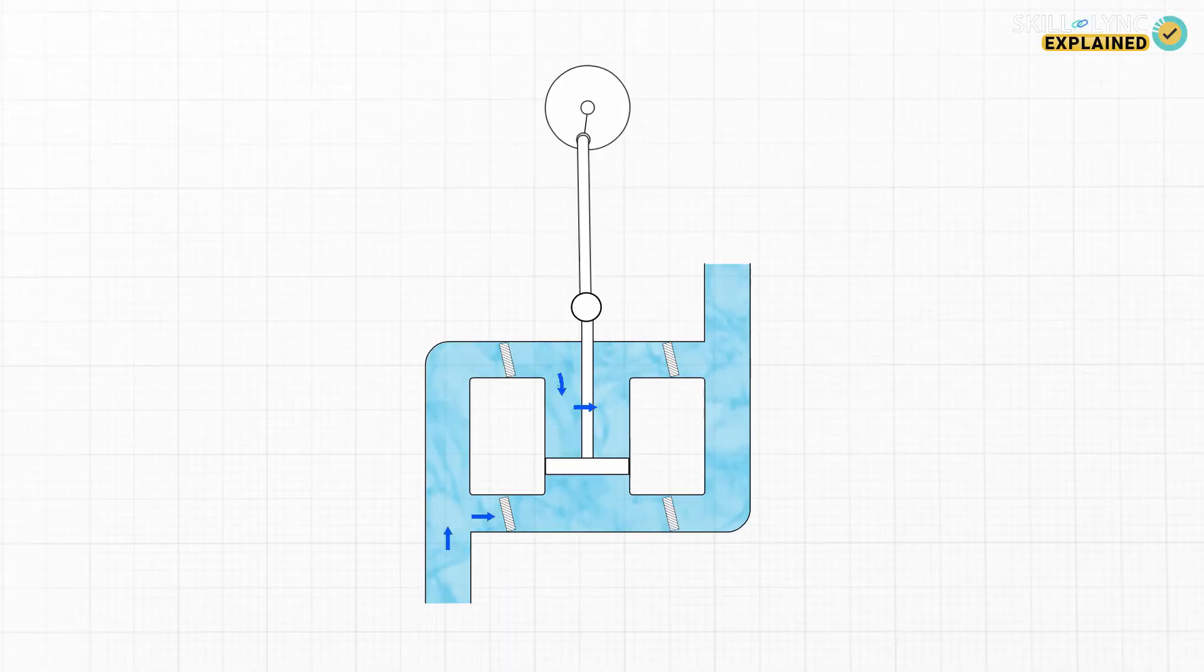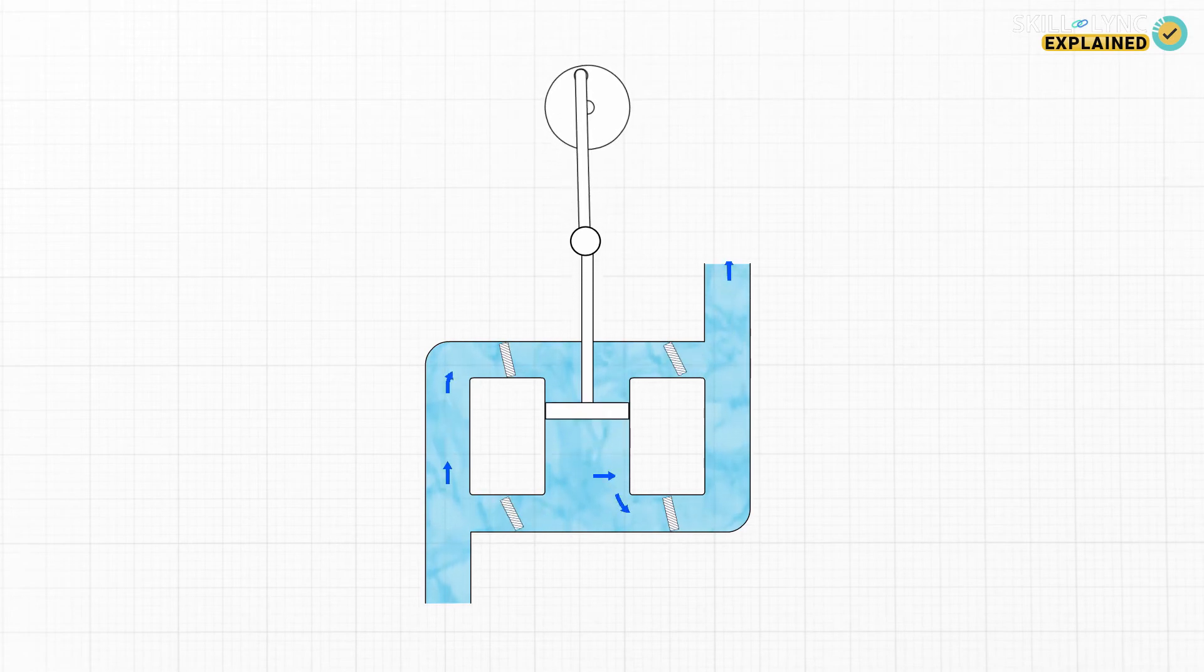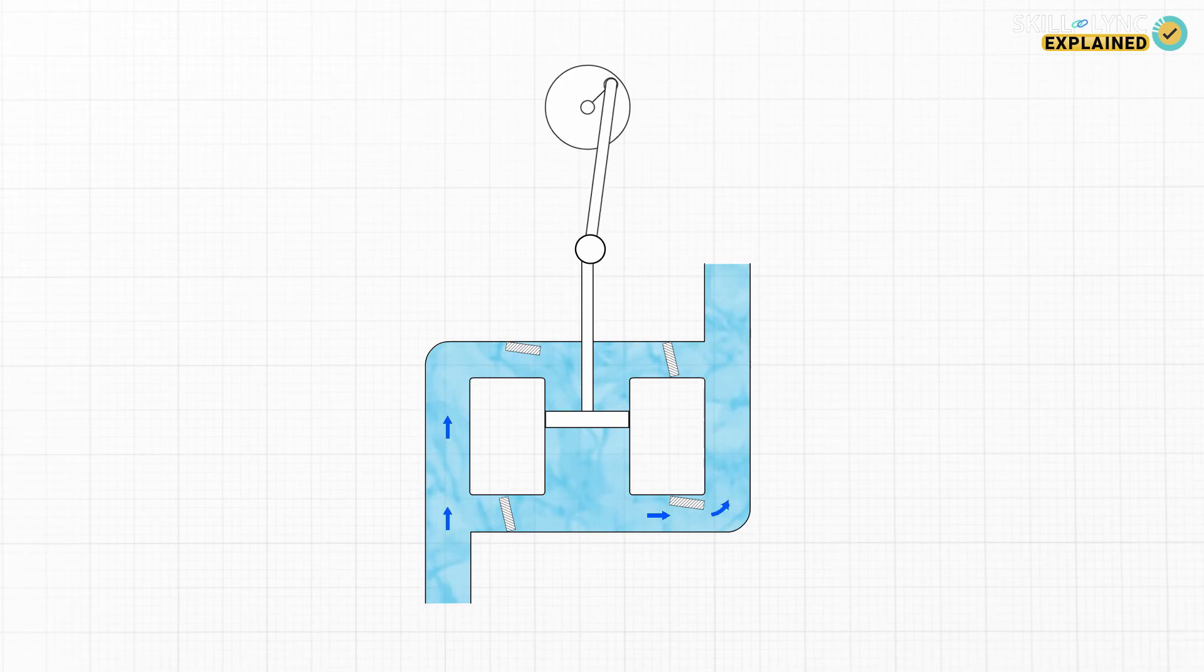In such pumps there are four valves that operate. Each pair of valve is operated for every stroke of the piston. So when one pair of the valves is drawing water into the pump the other pair is pushing it up.